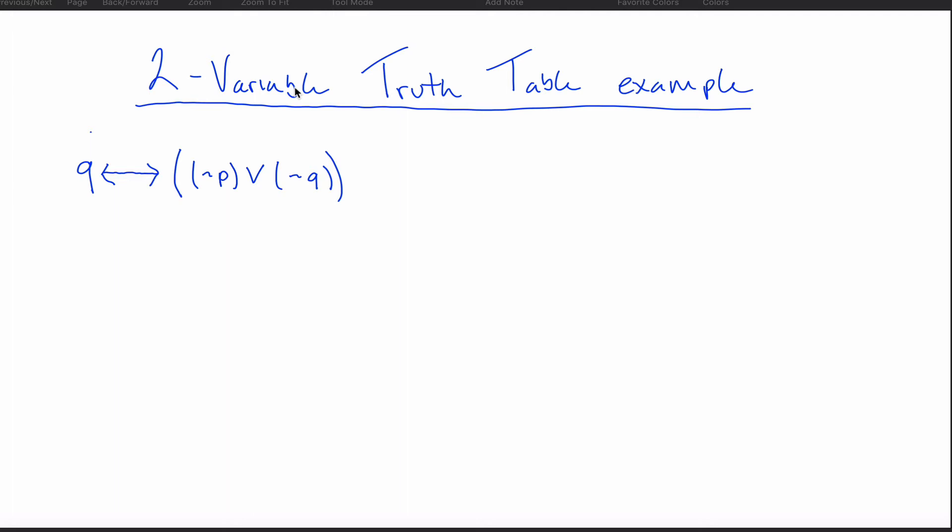I wanted to do one more thing with these truth table videos. I've done a couple more on the tutorial side, but I thought from the student perspective it might help to see something that might be more like what you'd see on a test and walk you through the problem from the very start to the very finish. This one's going to be a two-variable example, and then I'll make a three-variable example after this.